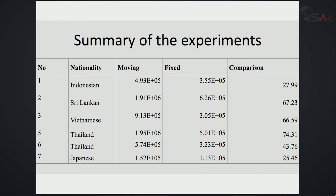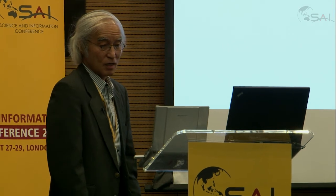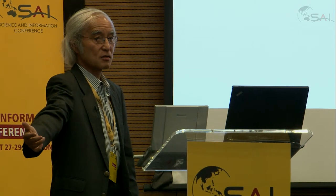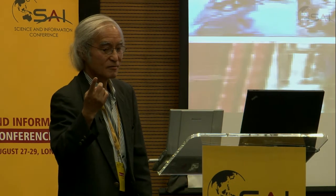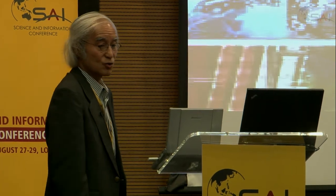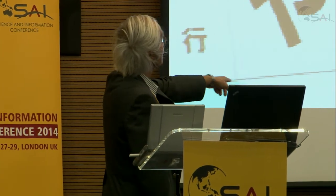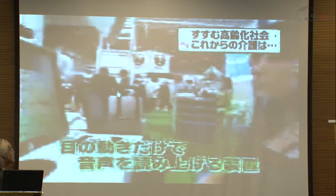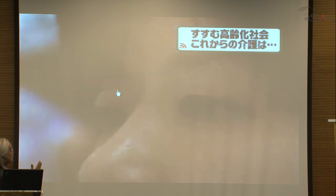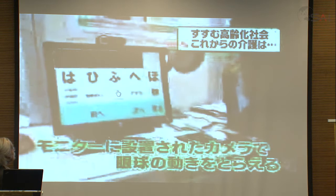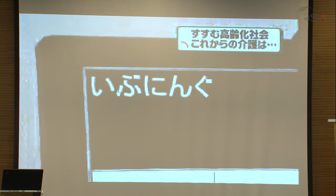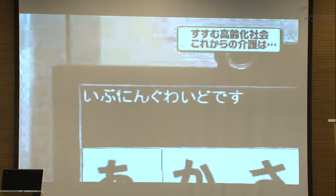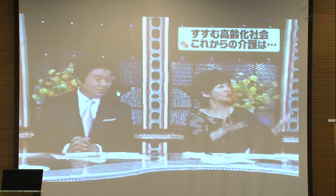This became the commercially available product called Megatalk — 'Mega' meaning the eye talks something — manufactured by a Japanese company. A TV news demonstration shows a young lady TV announcer using the product: just by sight, she inputs characters in Japanese, and after creating the sentence, text-to-speech software produces the sound.